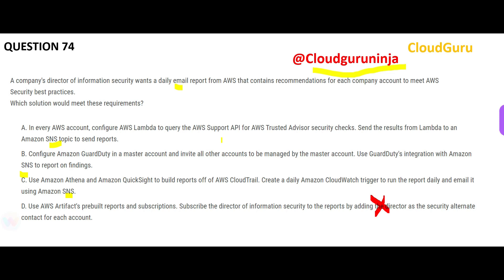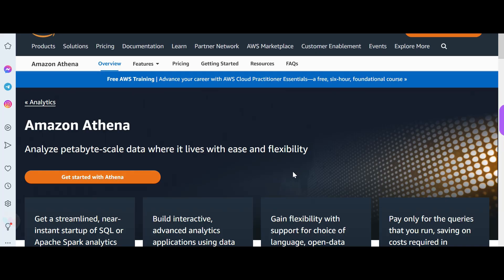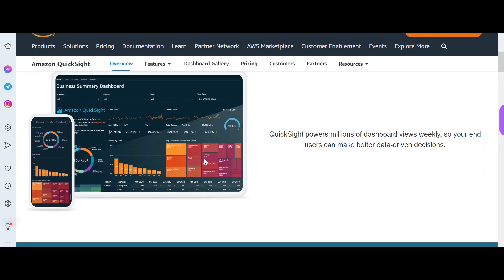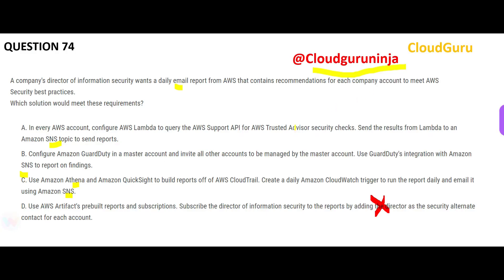So we can take D out. Now, option C is making use of Athena and QuickSight. Athena lets you fire queries on data stored in S3, and QuickSight is a dashboarding tool used to create visual dashboards. However, the question is not talking about creating dashboards at all, so C is a wrong use case here — C is a misfit.